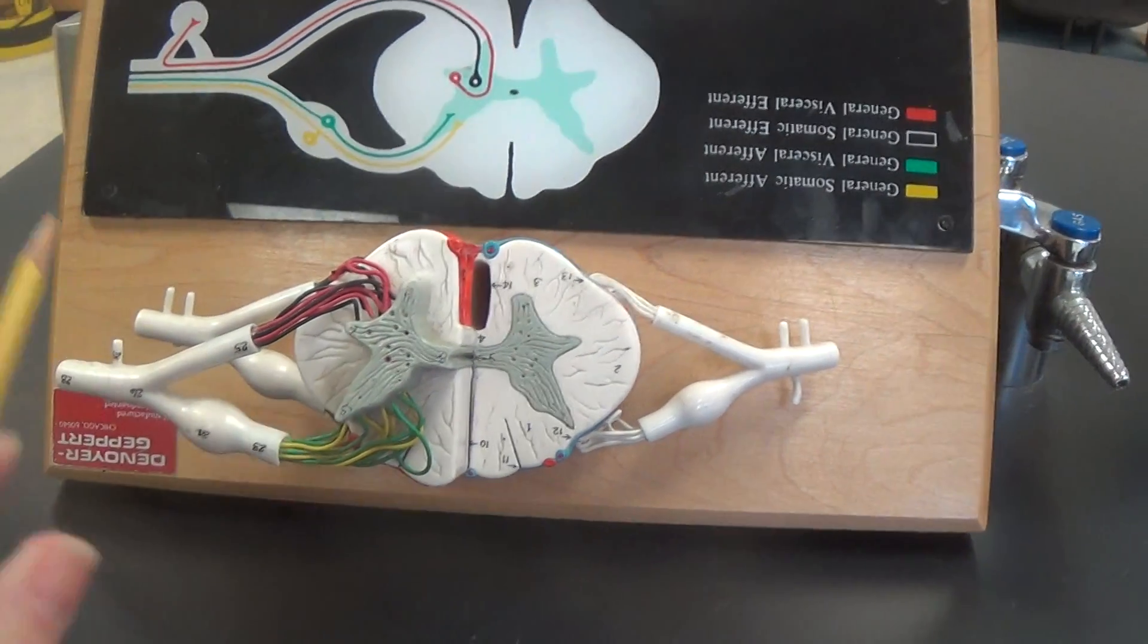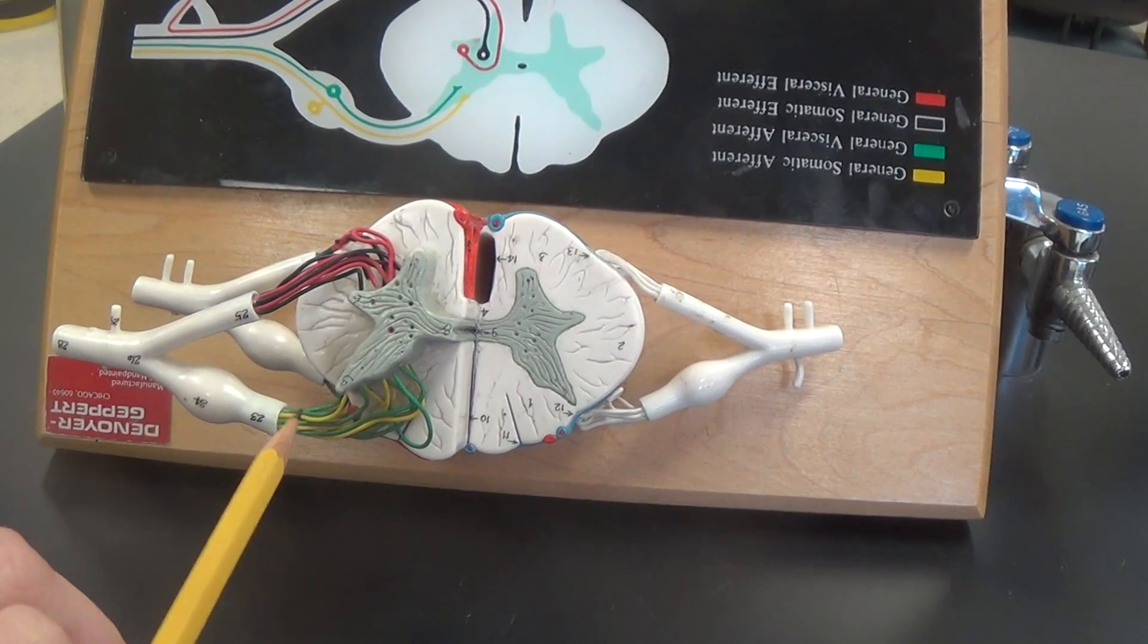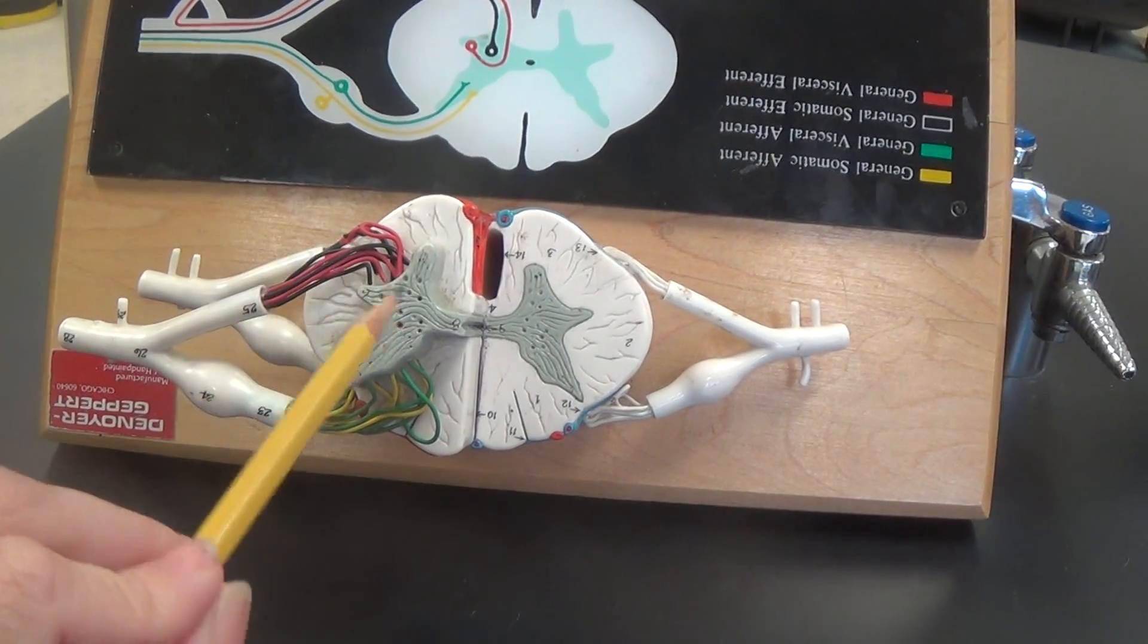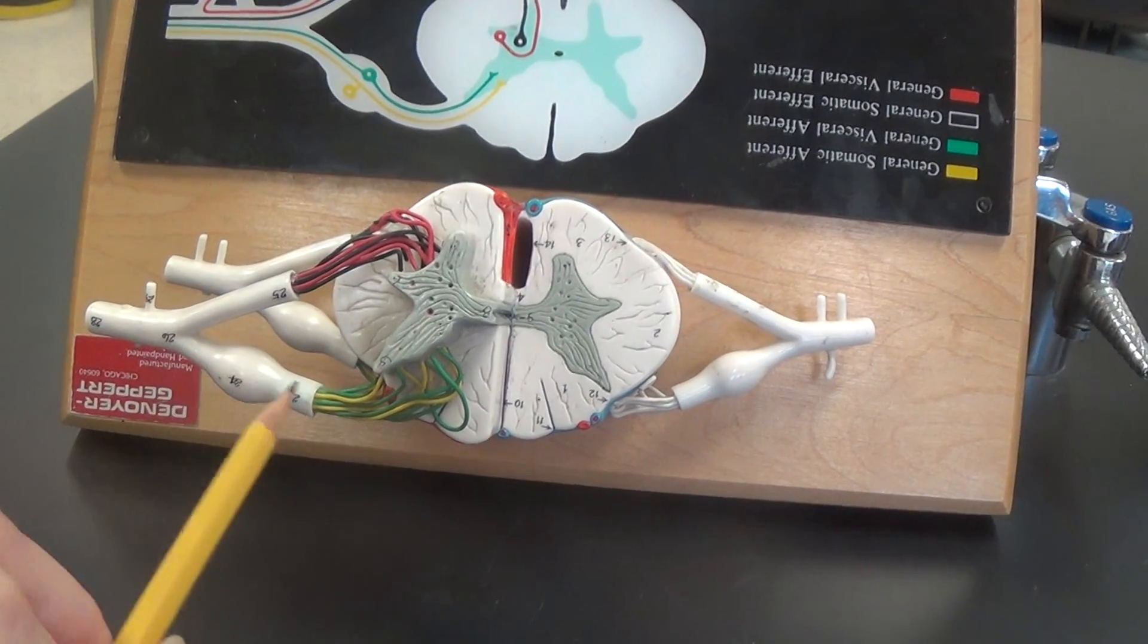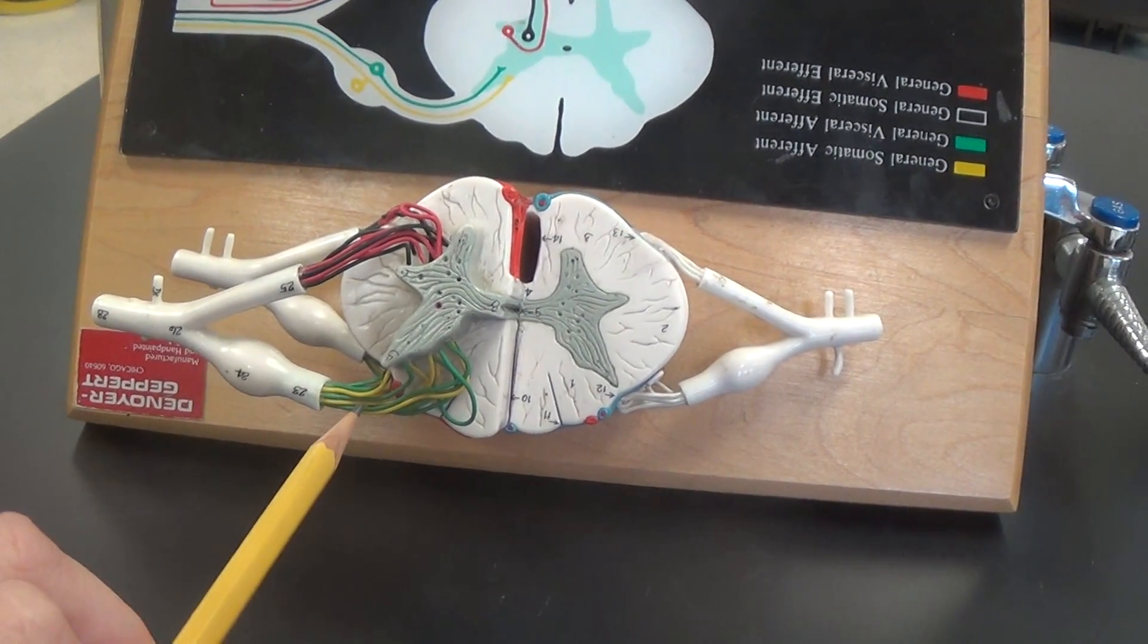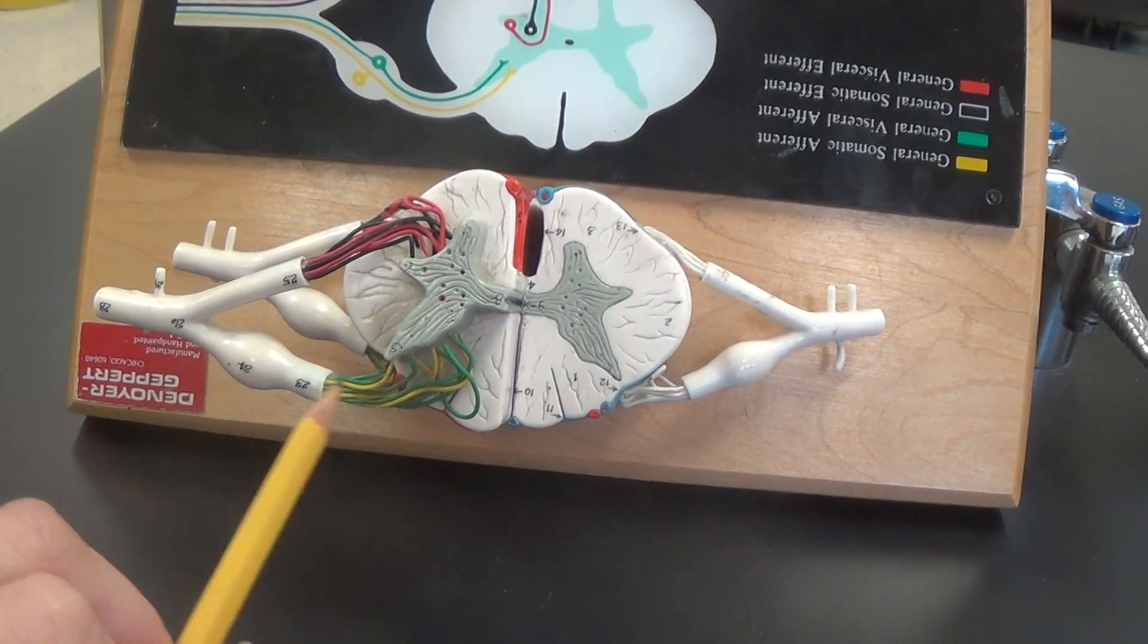Now the next thing to pay attention to is we have all these little rootlets coming off from the posterior horn, from the anterior horn, and they come together creating this nerve or what we will call a root. This is the dorsal side, so this is called the dorsal root.